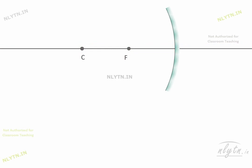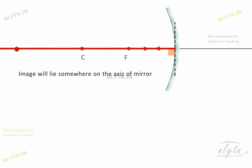Let us consider a point object placed on the axis of mirror in this region. If we consider a ray along the axis of mirror, then this ray strikes the mirror at the pole and is perpendicular to the surface of the mirror at this point. So this ray is reflected back to retrace its path. As the image of the object will lie somewhere along the reflected ray or its extension, we can say that the image will lie on the axis of mirror.